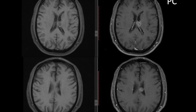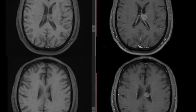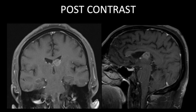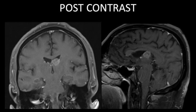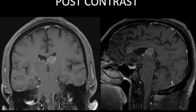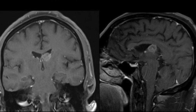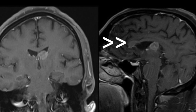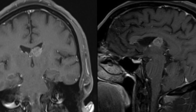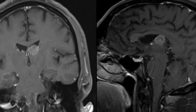The post-contrast images show intense heterogeneous enhancement within the lesion. Post-contrast coronal and sagittal images confirm the intensely enhancing intraventricular lesion. There was no dilatation of the ventricular system and no intraventricular hemorrhage. There were no other enhancing lesions within the rest of the brain parenchyma, and no lesions within the skull vault. In a known case of carcinoma lung, this is suggestive of choroid plexus metastasis.